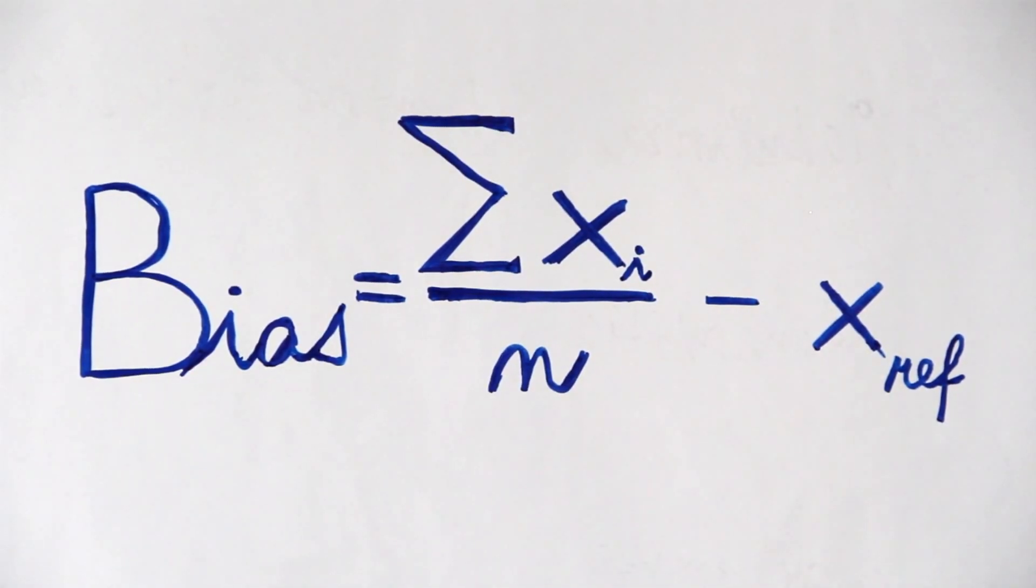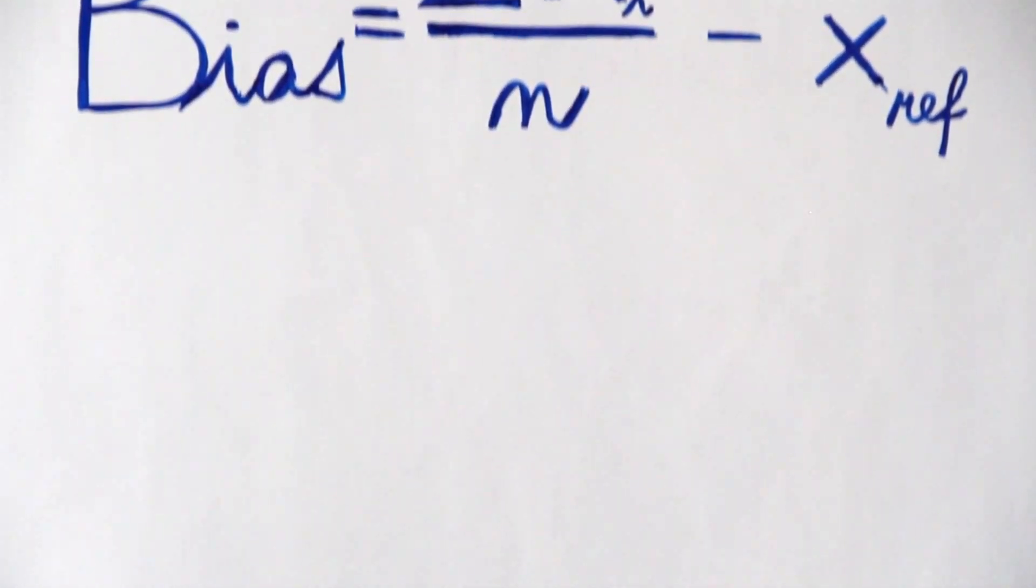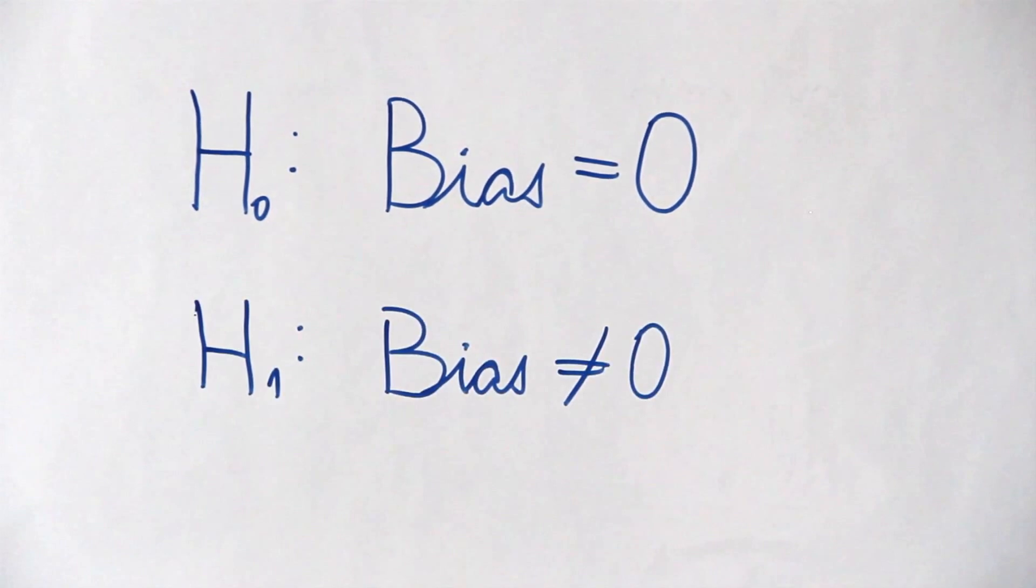And this is expressed as the test of hypothesis: the null hypothesis, the bias equals zero, and the alternative hypothesis, the bias does not equal zero.